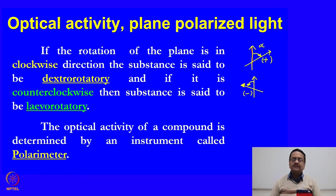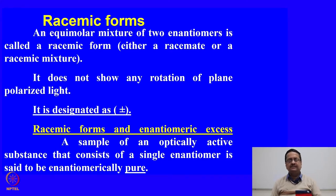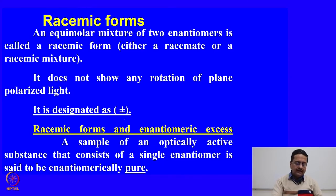The optical activity of a compound is determined by an instrument called a polarimeter. When we have an optically active compound, an equimolar mixture of two enantiomers is called a racemic form, or a racemate, or a racemic mixture, which essentially means you have both enantiomers present in a 1:1 ratio giving rise to zero optical rotation. It does not show any optical rotation of the plane polarized light and that is why it is designated as a plus-minus compound.